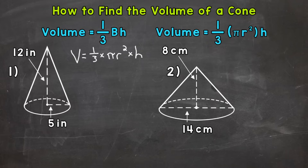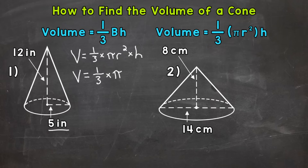Now I wrote out the formula a little different than how it's written at the top of the screen — that's okay, because I'm still multiplying 1/3 times the area of the base times the height. It doesn't matter how you represent the multiplication, symbols or parentheses, as long as you're multiplying 1/3 times the area of the base times the height. So once we have our formula written, we can plug in our radius and height. So we have volume equals 1/3 times π, our radius of 5 squared, times the height, which is 12. Now at this point we're ready to solve.